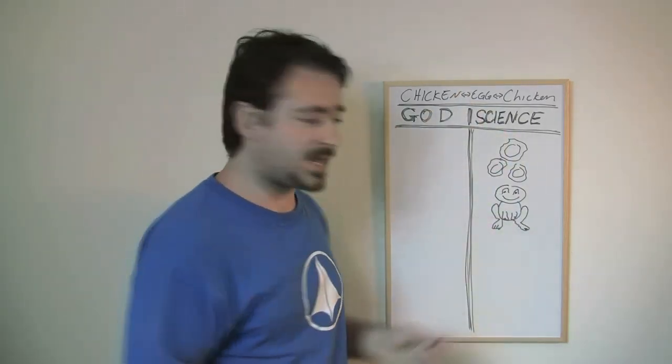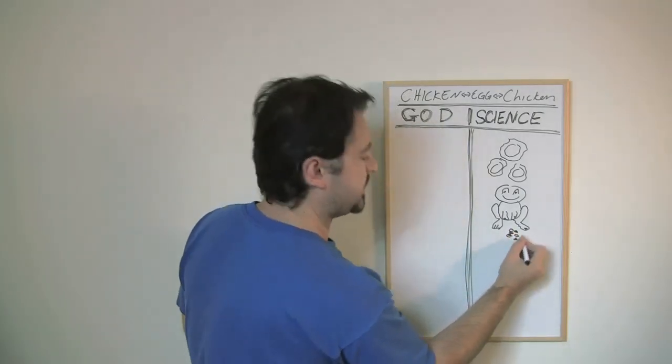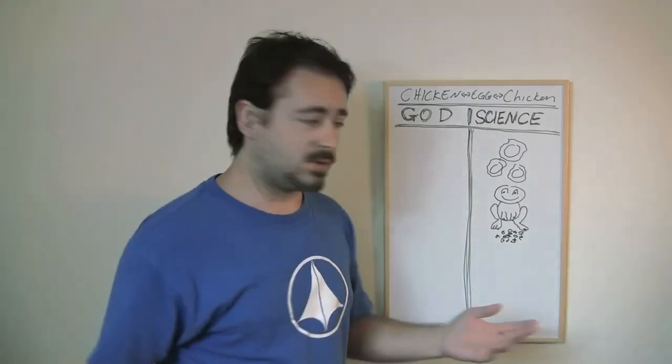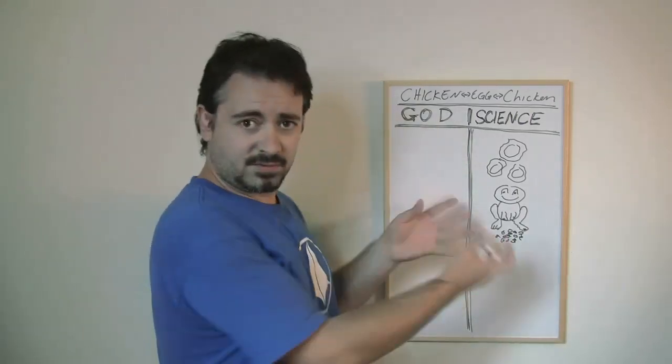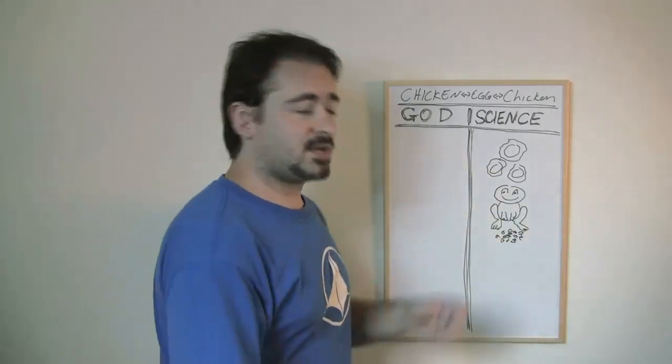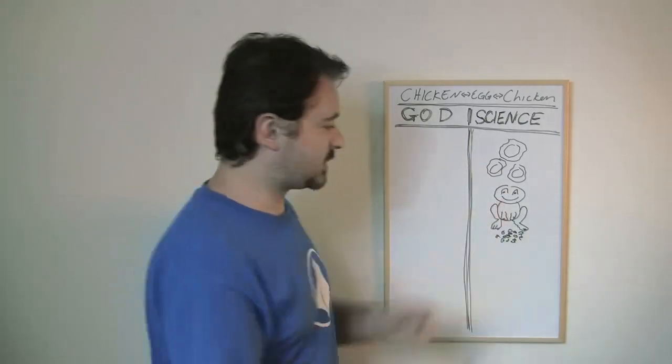Somewhere along the way, they started laying eggs. Little froggy eggs here. Looks like he's just taking a big dump. I don't know what frog poo looks like, but it could look like that. Those are frog eggs. And eventually, your life gets more complex, random mutations, natural selection, all that sort of stuff.